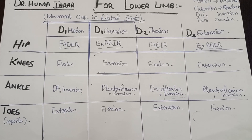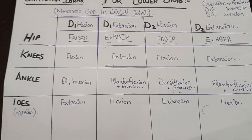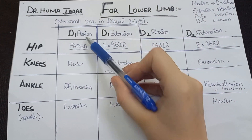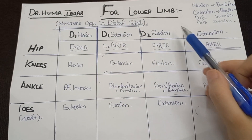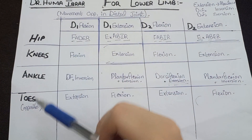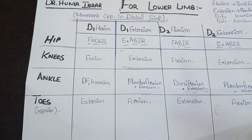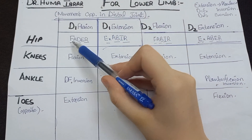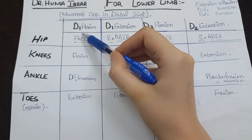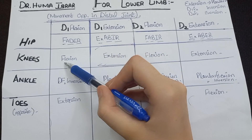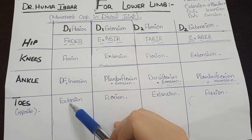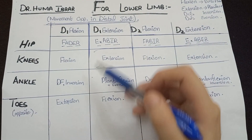Now for the PNF diagonal patterns of the lower limb. Remember that the movement in the toes is always opposite to the diagonal pattern — if there is flexion, there will be extension in the toes, and vice versa. Hip D1 flexion: flexion, adduction, and external rotation. Knee automatically follows hip, so there will be flexion in the knee. Ankle: dorsiflexion and inversion. Toes: extension — opposite to hip flexion.